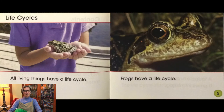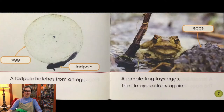All living things have a life cycle. Frogs have a life cycle. A tadpole hatches from an egg. It grows into a frog. A female frog lays eggs. The life cycle starts again.